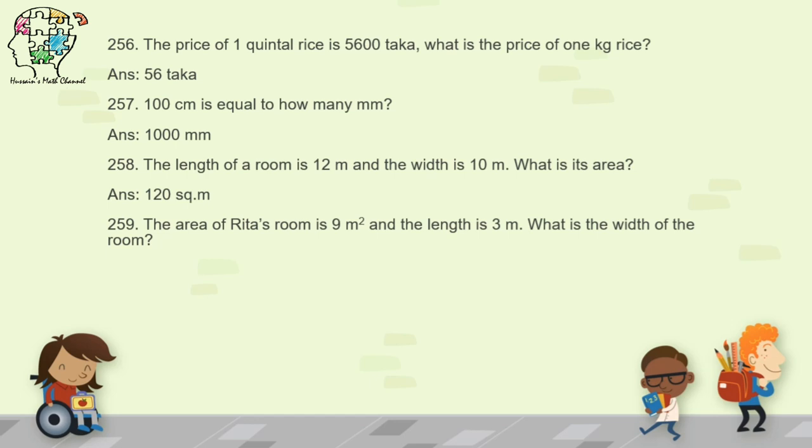Question 259: the area of Rita's room is 9 square meters and the length is 3 meters — what is the width? To find the width, divide the area by the length: 9 divided by 3 equals 3 meters.